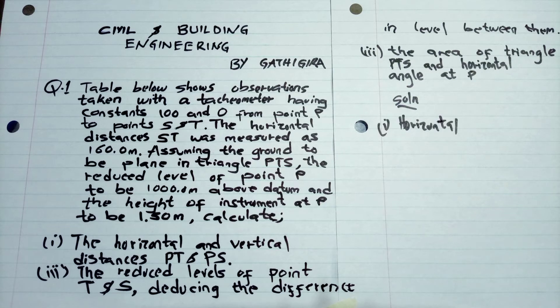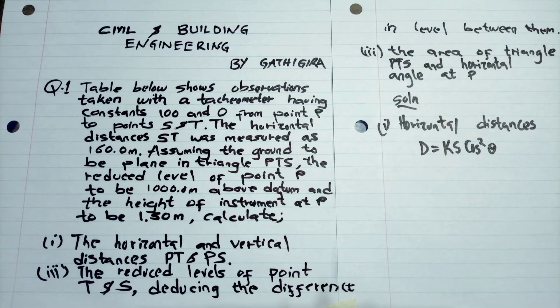So the solution. First of all, we find the horizontal distances PT and PS using the tachometric formula.